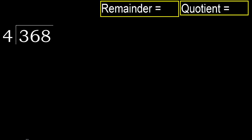368 divided by 4. 3 is less, therefore next. 36 is not less, therefore with 36 — multiply 4 by which number is nearest to 36,